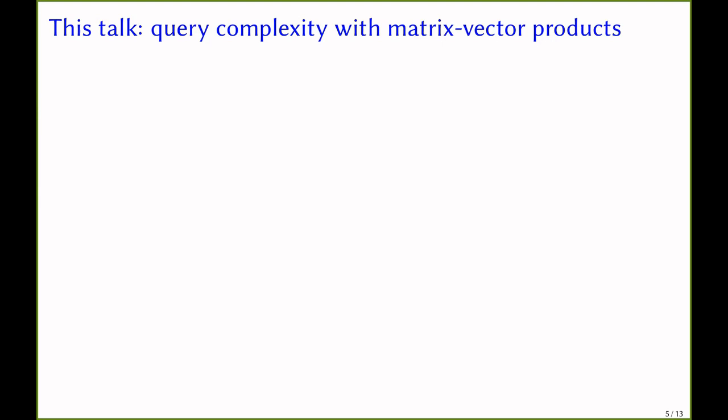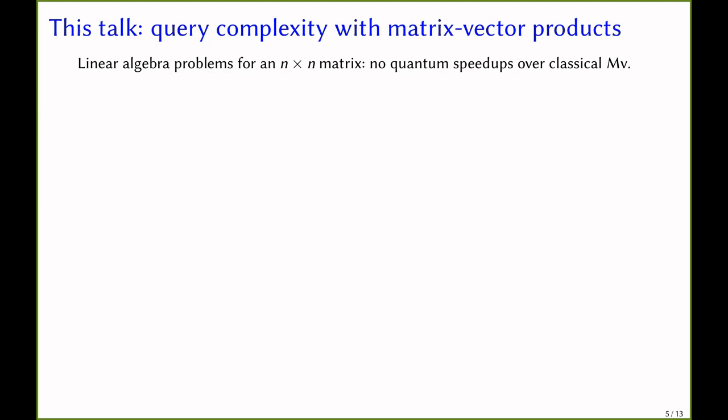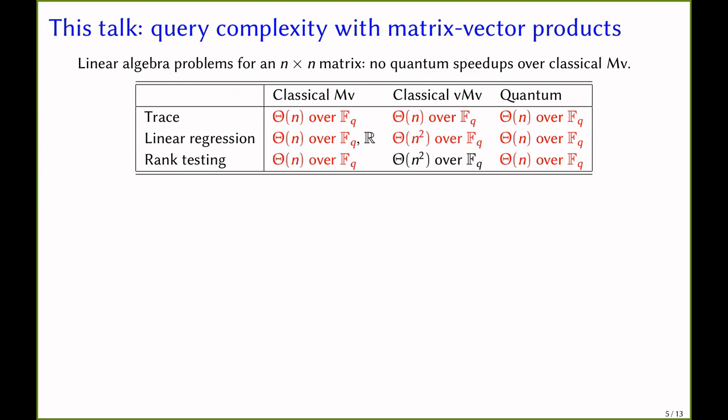In this work, we study quantum query complexity for various problems with matrix-vector products. We show that for linear algebra problems studied in this paper, there are no quantum speedups. In particular, for trace, linear regression, and rank testing, there are linear quantum lower bounds. And because there is always a trivial linear algorithm that learns the entire matrix, this shows that quantum algorithms do not provide speedups over classical algorithms.